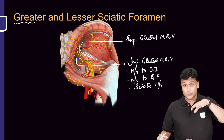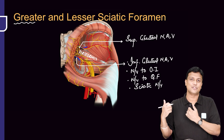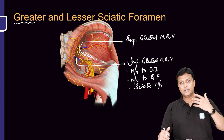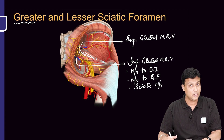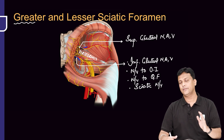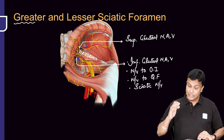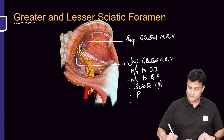The structures are actually coming from the pelvis into the gluteal region. When they are coming into the gluteal region, above the piriformis there will be superior gluteal nerve, artery, and vein, and everything else is passing below the piriformis. Now along with these structures, please include two more things: the pudendal nerve, and along with it there will be internal pudendal artery and vein.